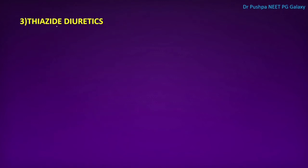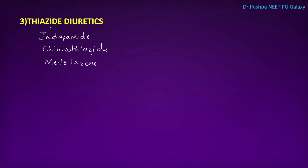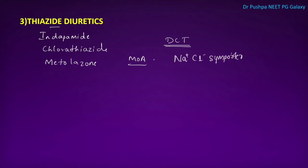The next class is thiazide diuretics. Drugs include indapamide, chlorothiazide, and metolazone. The site of action is the distal convoluted tubule. The mechanism is inhibition of the sodium chloride symporter, causing loss of sodium and chloride, increased sodium load in the collecting duct, hypokalemia, and metabolic alkalosis.